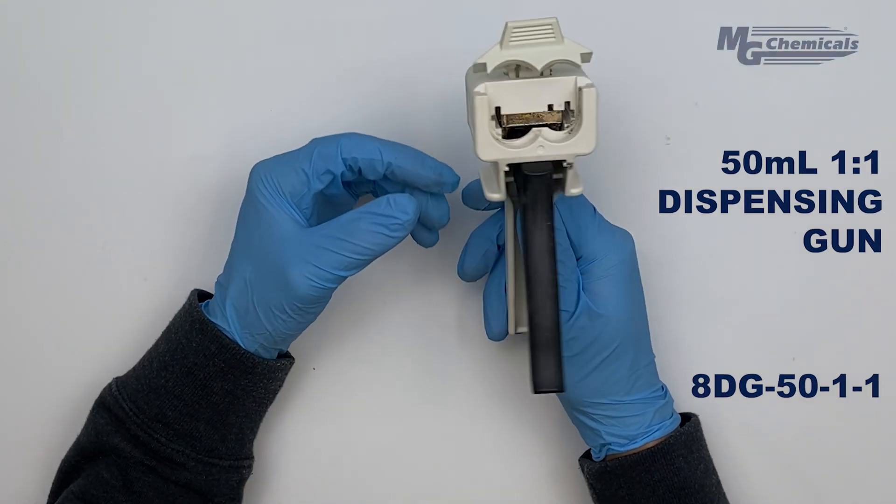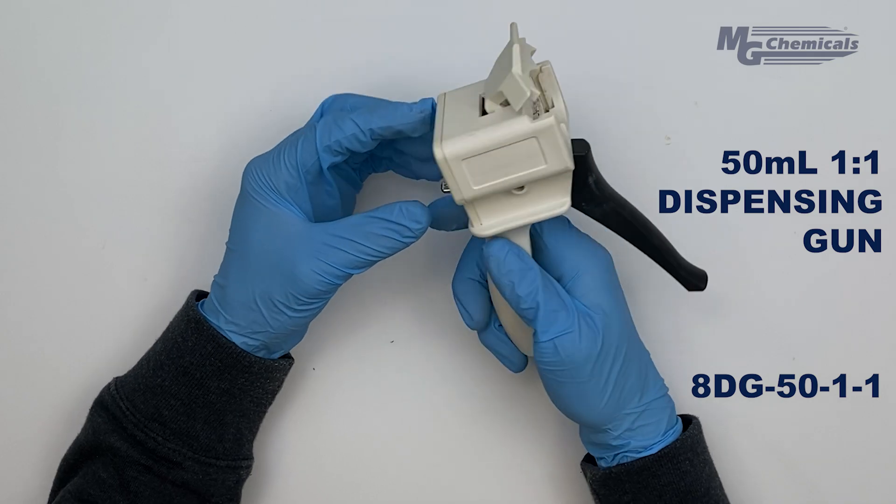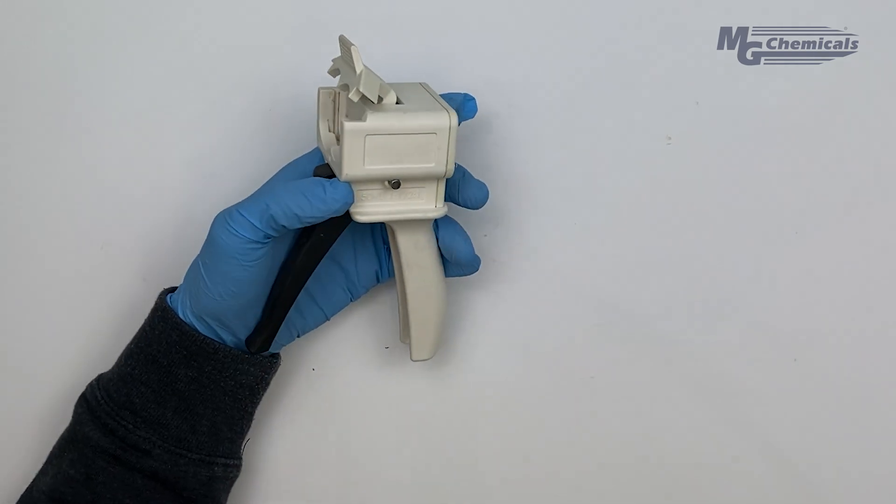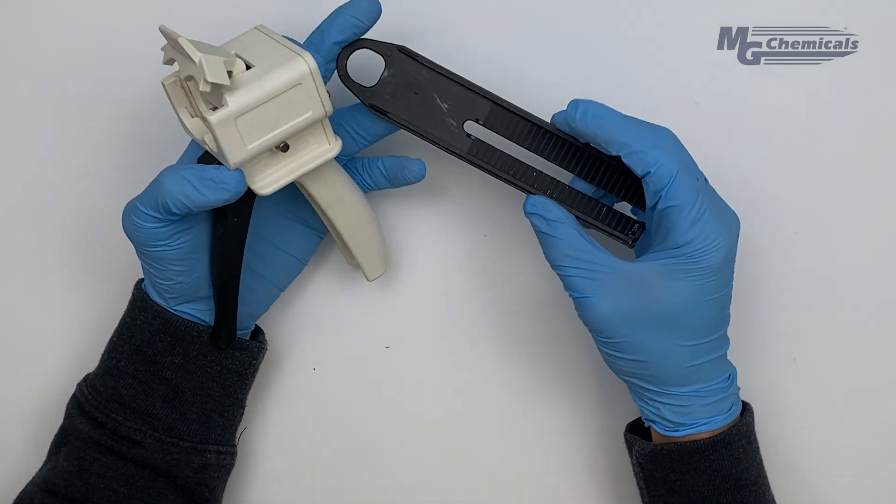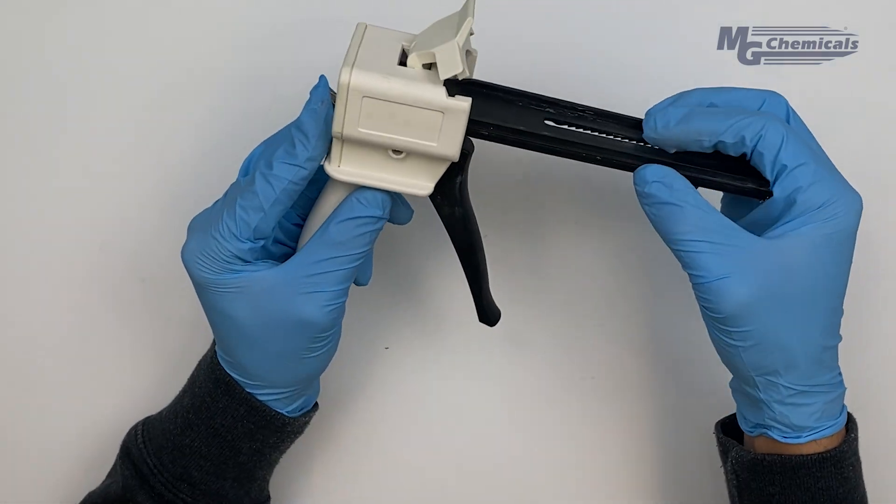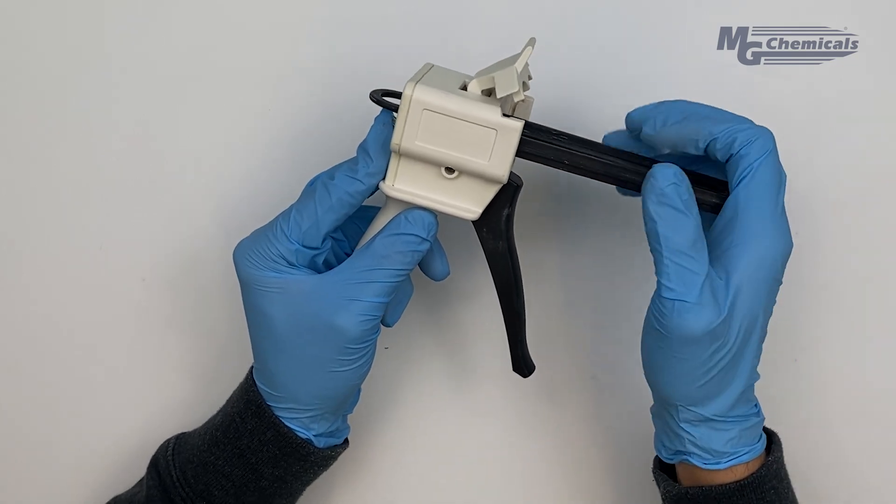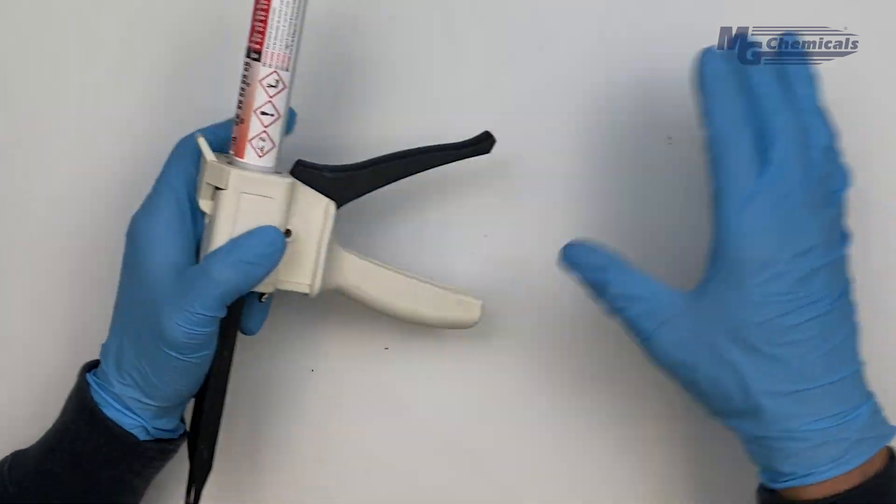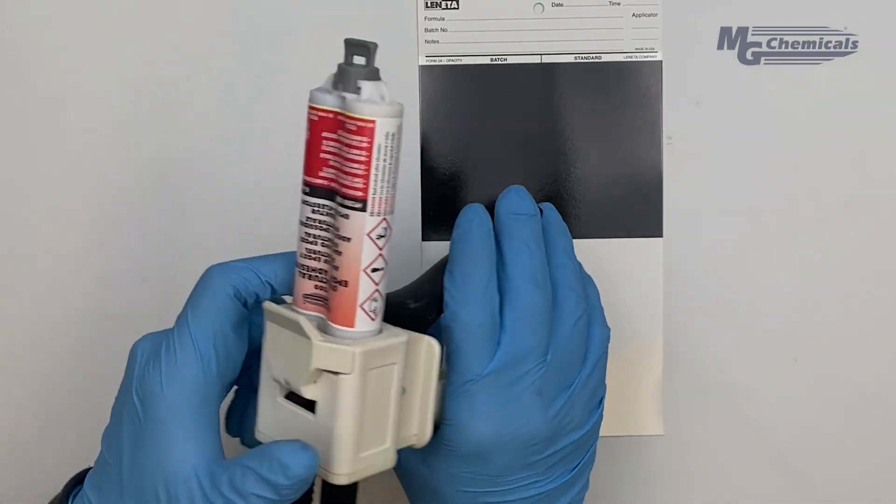For the 50 ml cartridge you'll need the 8DG-50-1-1 dispensing gun. Start by flipping open the top hatch and pressing up on the metallic latch on the back to load the plungers into the gun. Now you can slide the cartridge into the dispenser as shown and pull the front hatch down to secure the cartridge in place.